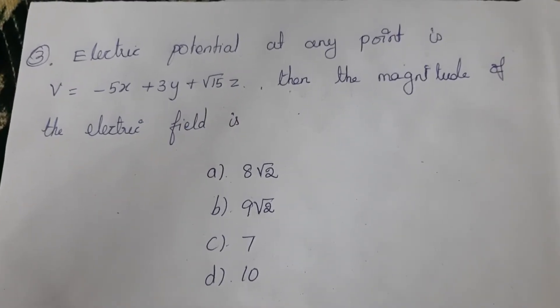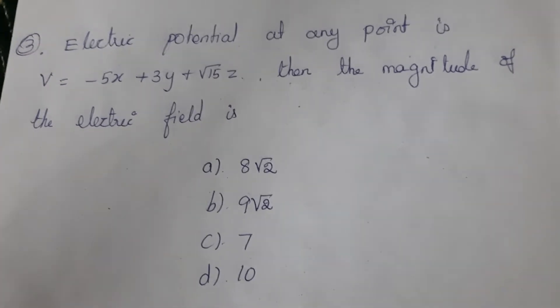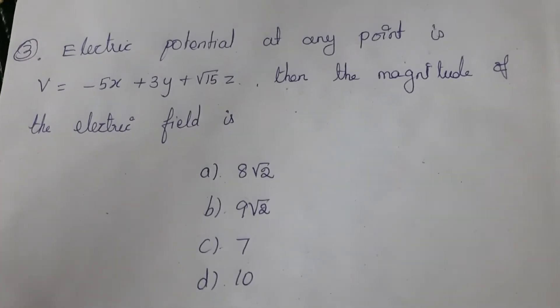Third question: Electric potential at any point is V = -5x + 3y + √15z. Then the magnitude of the electric field is: